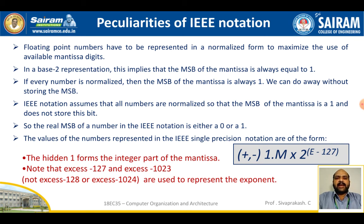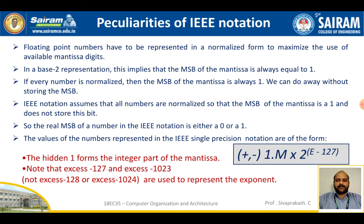The value of numbers in IEEE single precision is represented as ±1.M × 2^(E−127), using an XS-127 exponent bias. For 64-bit double precision, the bias is XS-1023. The exponent values −128 and −1024 are reserved and not used for normal representation. This hidden-one form in the integral part of the mantissa is the main peculiarity of IEEE notation.